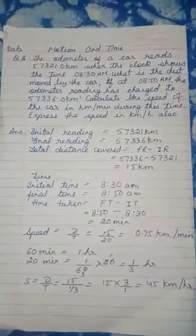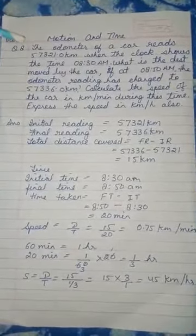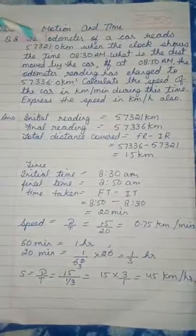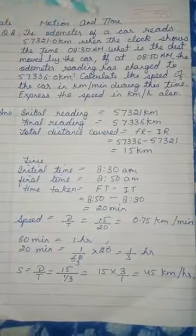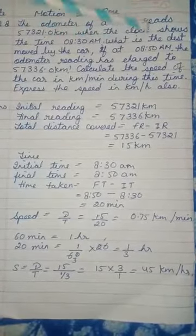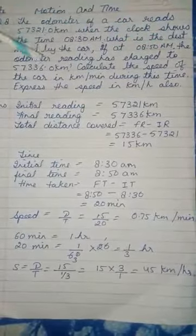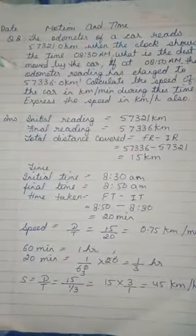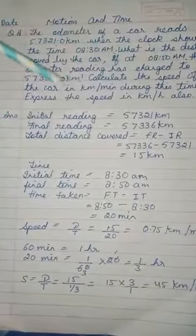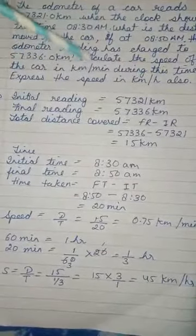Lesson: Motion and Time. Question number 8: The odometer of a car reads 57321 kilometers when the clock shows the time 8:30 a.m. At 8:50 a.m., the odometer reading has changed to 57336 kilometers. Calculate the distance moved by the car, and calculate the speed of the car in kilometers per minute during this time.